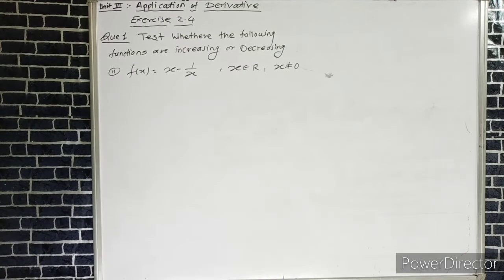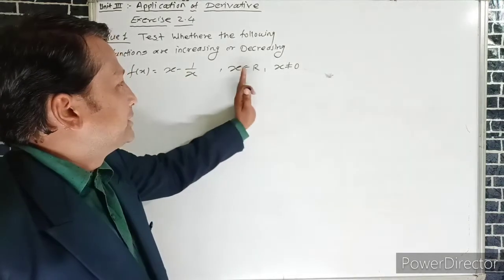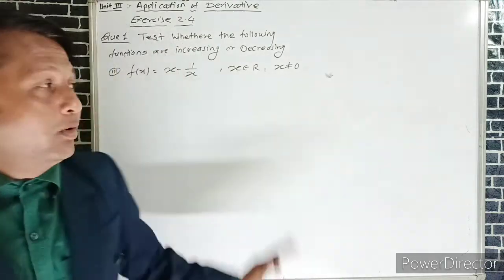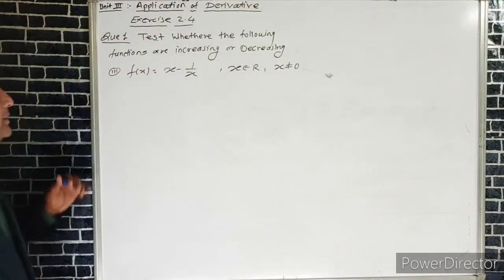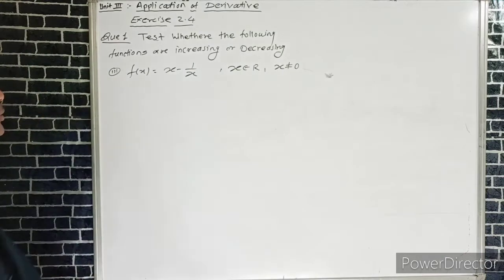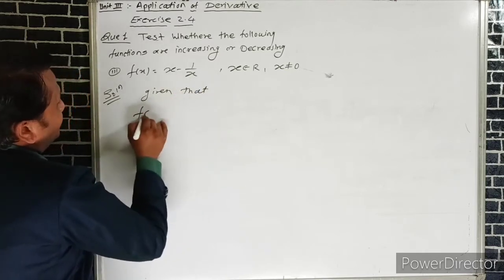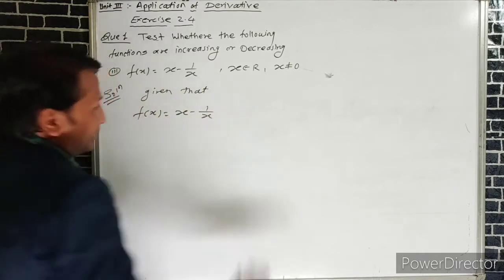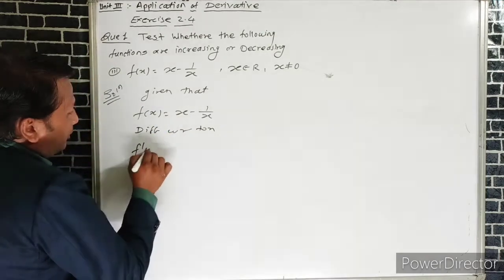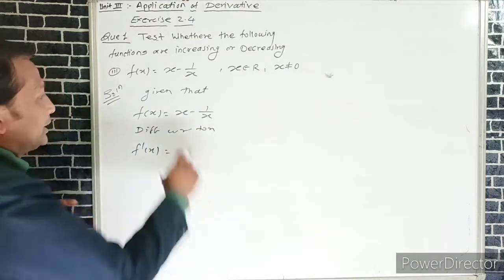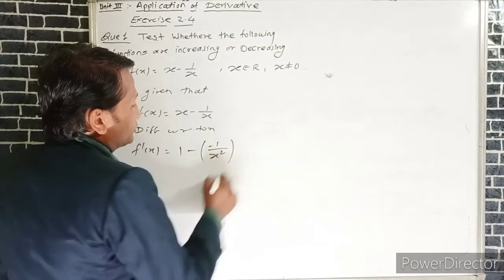Example 3: f(x) = x - 1/x, where x belongs to real numbers but x ≠ 0. To verify whether the function is increasing or decreasing, we differentiate with respect to x. The derivative of x is 1, and the derivative of 1/x is -1/x². So f'(x) = 1 - (-1/x²) = 1 + 1/x².